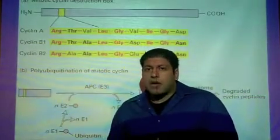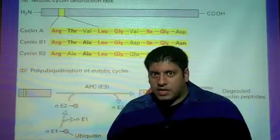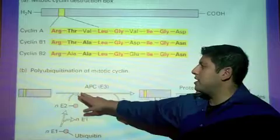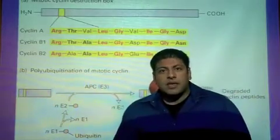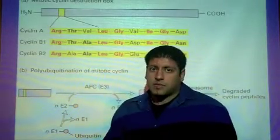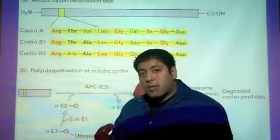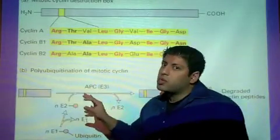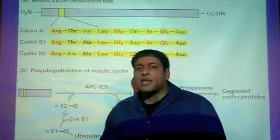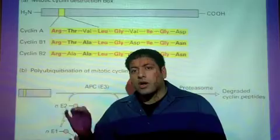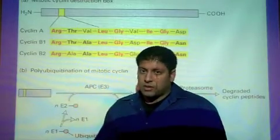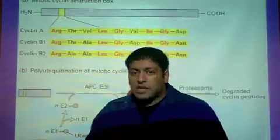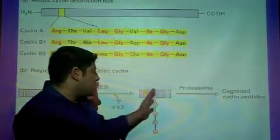During anaphase, there is a protein that gets activated called the APC, the anaphase promoting complex. When the anaphase promoting complex is activated, it does something called ubiquitination. Ubiquitination is simply a fancy word for tagging a protein.